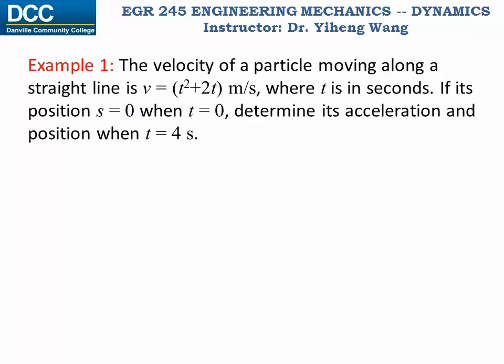Some problems are quite straightforward, like this one. The particle's velocity is given as a function of time. Initial position is zero. And we need to determine its acceleration and position at a time t equals to 4 seconds.